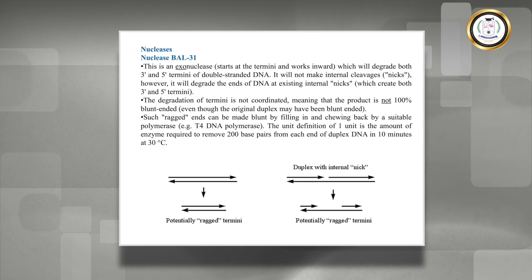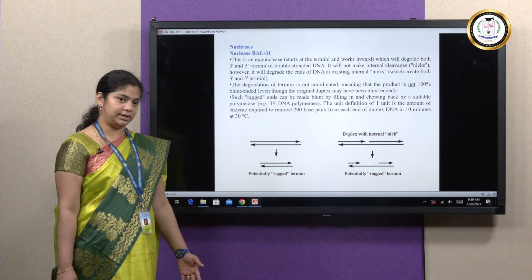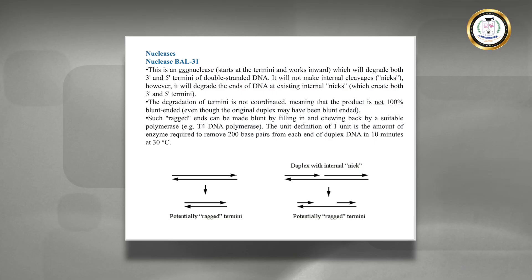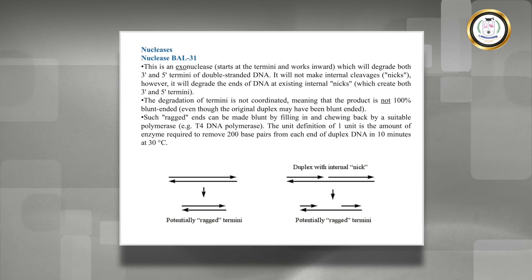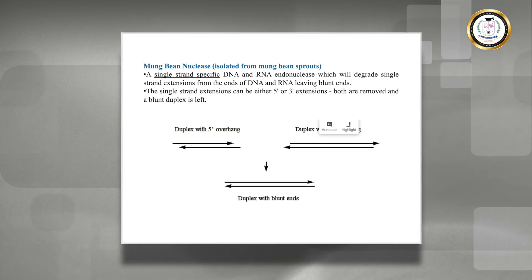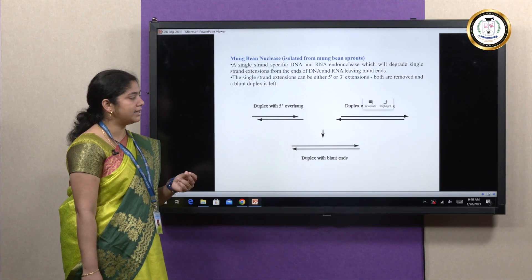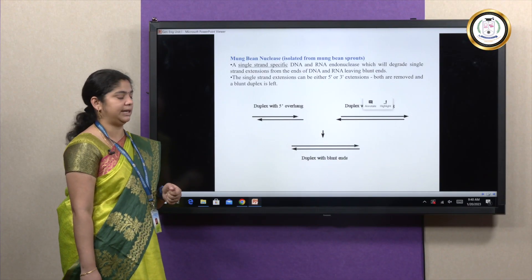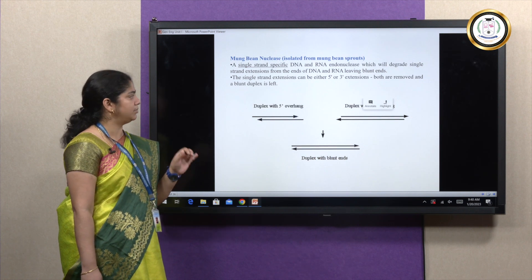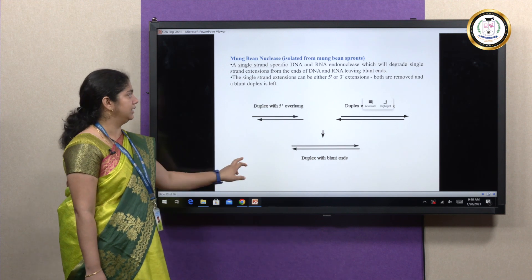The other enzymes include nuclease. Nuclease, as the name suggests, cuts either a DNA or an RNA. The cut works based on the target sequence. You can see here there are many other nucleases. We have exonucleases like mung bean nuclease, which is isolated from mung bean sprout—it's a single-stranded specific DNA and RNA endonuclease. Here it can either cut at both ends or both are removed and the blunt end is left.